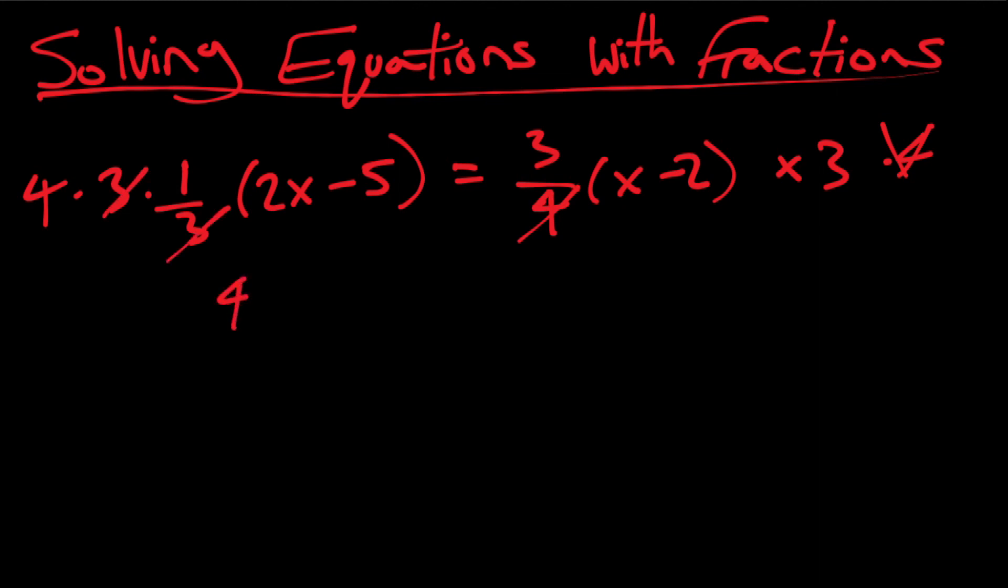And now I'm left with, that cancels that out. So I'm left with four times two x minus five, and on this side I'm left with nine times x minus two.